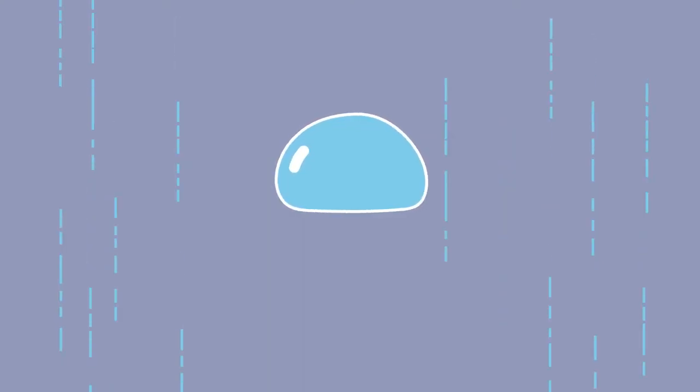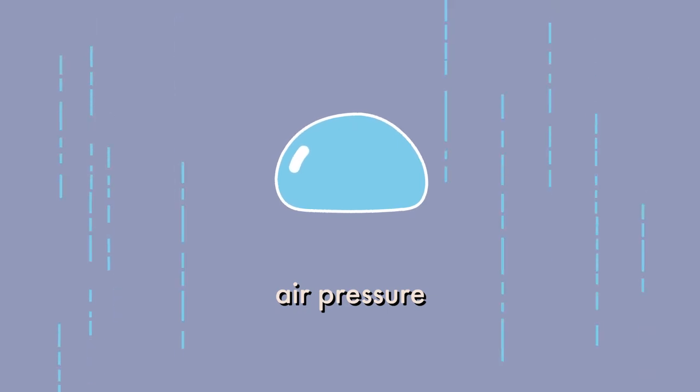As it falls through the atmosphere, the bottom of the raindrop encounters more air pressure, pushing against the bottom and flattening it. If it collides with other raindrops, it grows larger, causing it to fall faster. The drop is then distorted into a parachute shape before breaking apart into smaller, rounder drops.